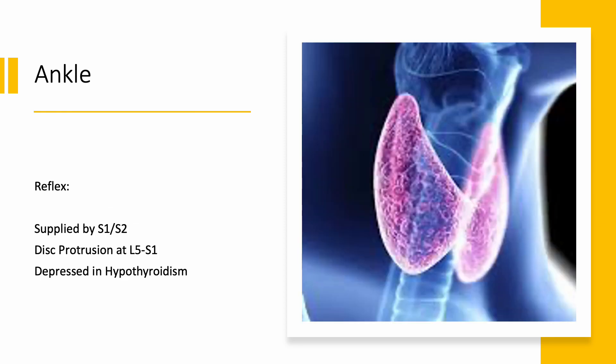Let's look at some more facts. How about the ankle reflexes? The ankle reflex, which is the Achilles tendon reflex, is innervated by S1 and S2. Most commonly it can be seen with disc protrusion at the L5-S1 level. It is classically depressed in hypothyroid, so here you get a link of ankle reflex with the thyroid gland.